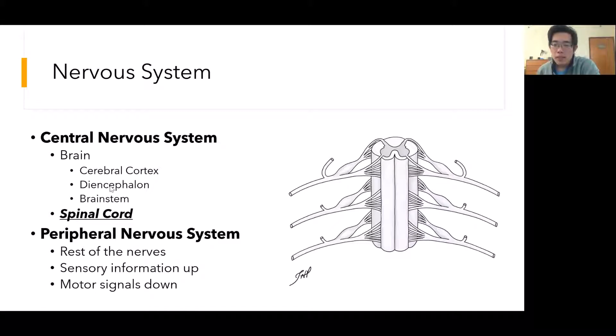The spinal cord is an essential part of our nervous system. Let's start with a quick overview on how the spinal cord fits into the big picture. We can divide our nervous system into two parts, the central nervous system and the peripheral nervous system. We can think of the central nervous system as our command system. It includes the brain, which consists of the cerebral cortex, the diencephalon, and the brain stem. And this is also where the spinal cord fits in.